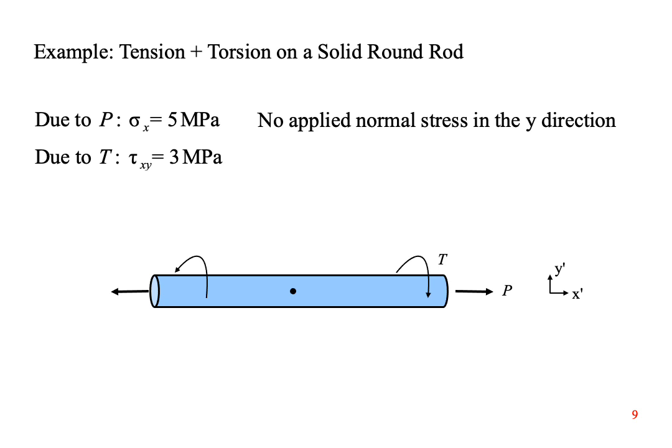This example is a combination of two applied stresses, tension and torsion. Let's skip step 0 and say that the applied normal stress in the x direction is 5 MPa, and the applied torsional shear stress is 3 MPa. There is no applied normal stress in the vertical direction, so sigma y is 0.